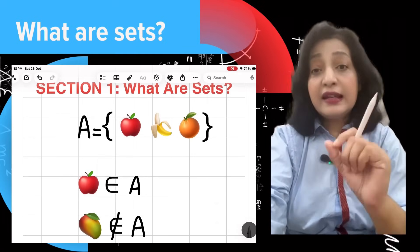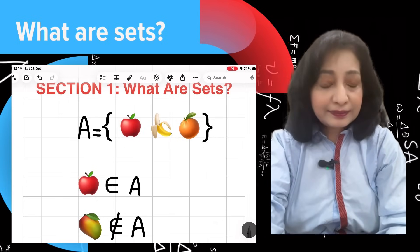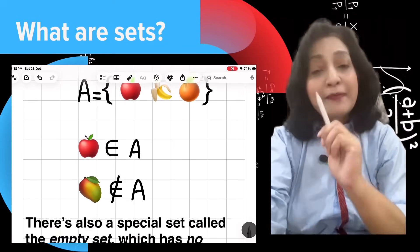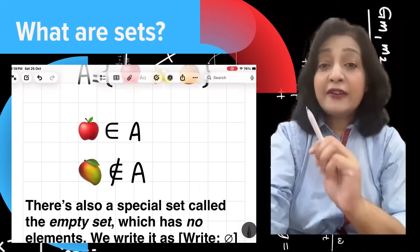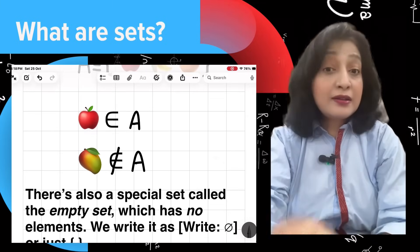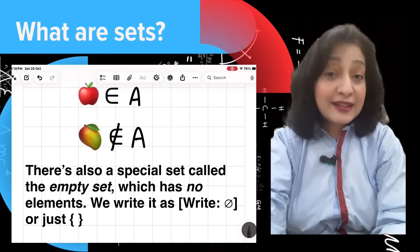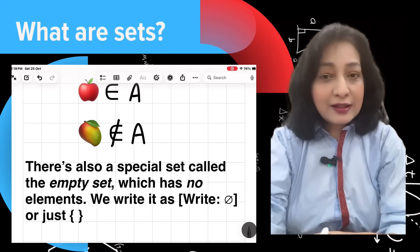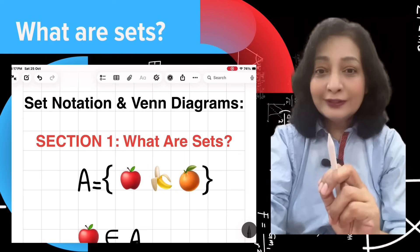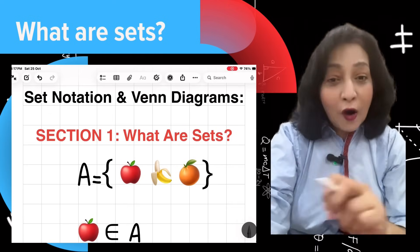We write sets using curly braces and list the elements inside. Is apple in the set A? Yes, apple is in set A, and in mathematics we can write it as: apple belongs to A. But if someone is asking, is mango in the set? How can we reply? I would say no. Mango does not belong to A. Got it?